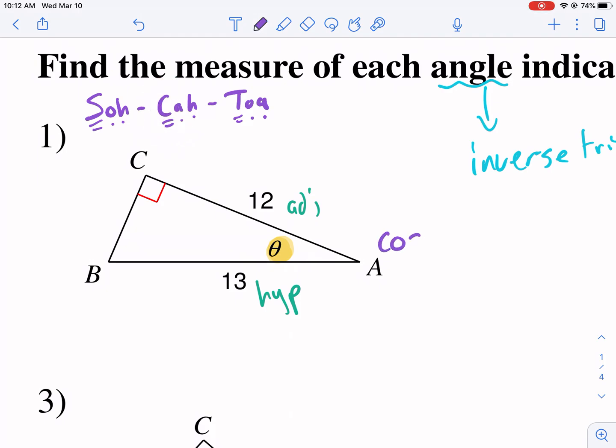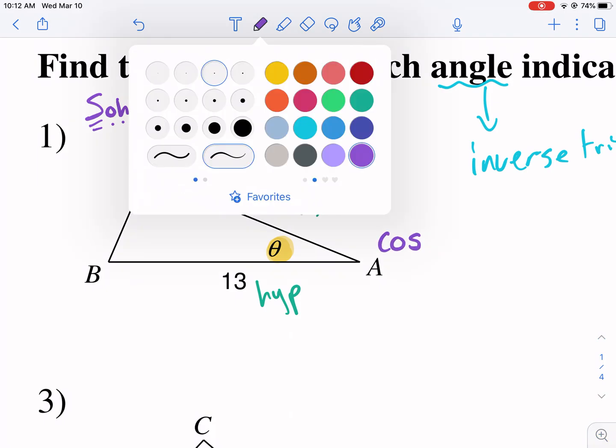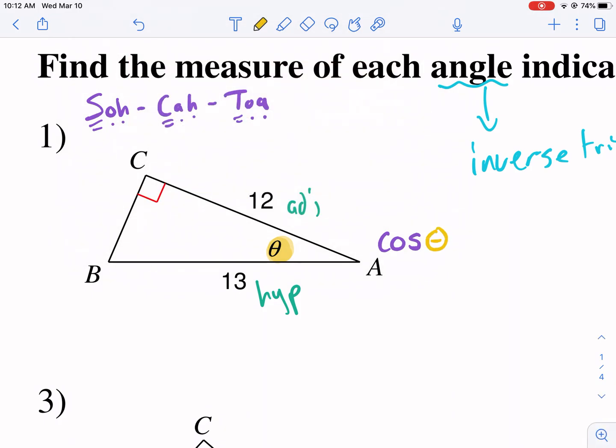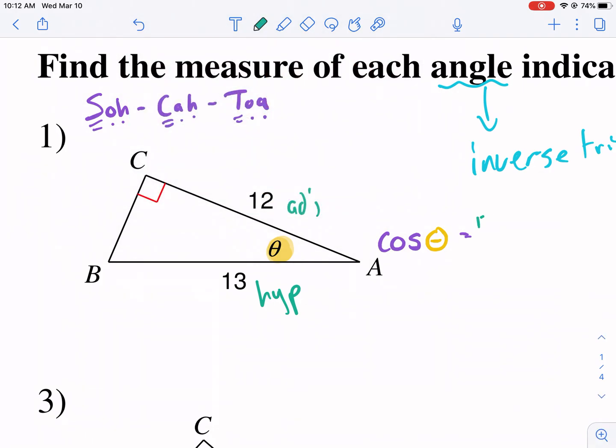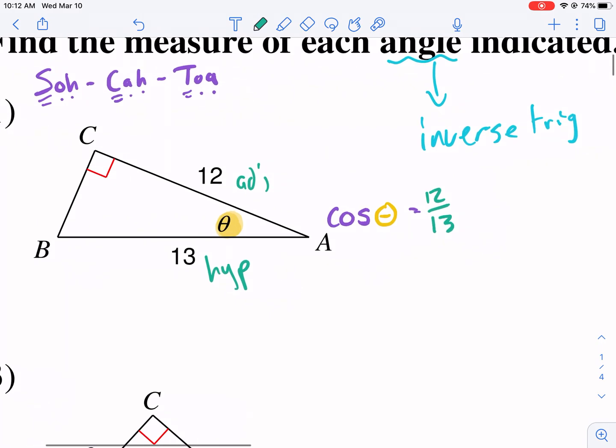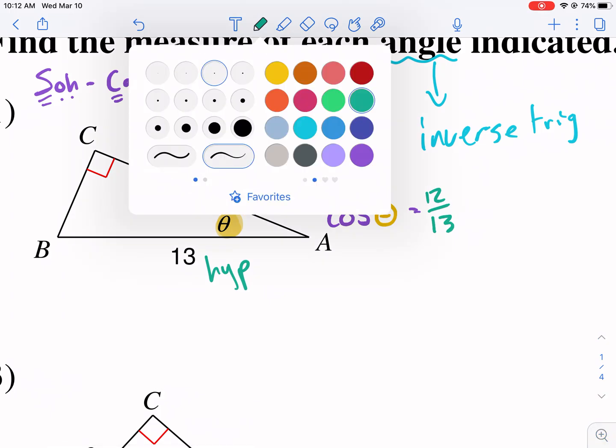If you're unfamiliar with SOH-CAH-TOA, that's usually a useful way to remember. SOH-CAH-TOA is just a way to remember that sine is opposite over hypotenuse, cosine is adjacent over hypotenuse, and tangent is opposite over adjacent. Clearly, we're going to be using cosine. So we're going to be using the cosine of theta, and we're going to be looking for theta.